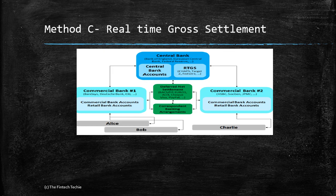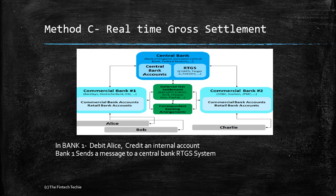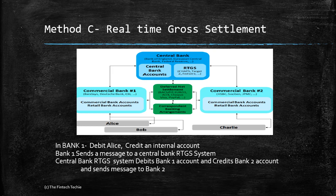In Method C — Real-Time Gross Settlement (RTGS), usually used for high-value payments — Bank One debits Alice's account and credits an internal account. It sends a message to the central bank RTGS system, which holds accounts of all banks. The RTGS system debits Bank One's account and credits Bank Two's account, then relays the message to Bank Two. Bank Two, on receipt of the message, credits Charlie and debits an internal account.